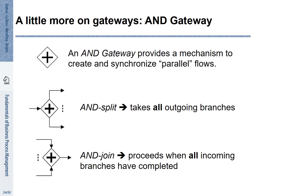Let us look at the second type of gateways: AND gateways. They are used to indicate that parallel flows are triggered and that they are synchronized. At the AND split, if a token arrives, two separate tokens are created on the output side and these can be independently processed. The AND join requires a token on each of the incoming branches. These tokens are synchronized and only one token is provided on the output side.